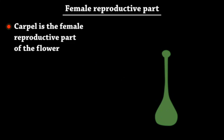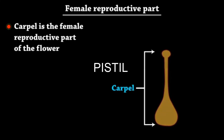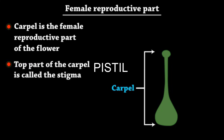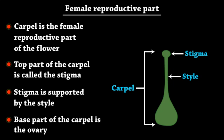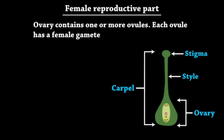The carpel is the female reproductive part of the flower. The top part of the carpel is called the stigma. The stigma is supported by the style. The base part of the carpel is the ovary. The ovary contains one or more ovules, and each ovule has a female gamete.